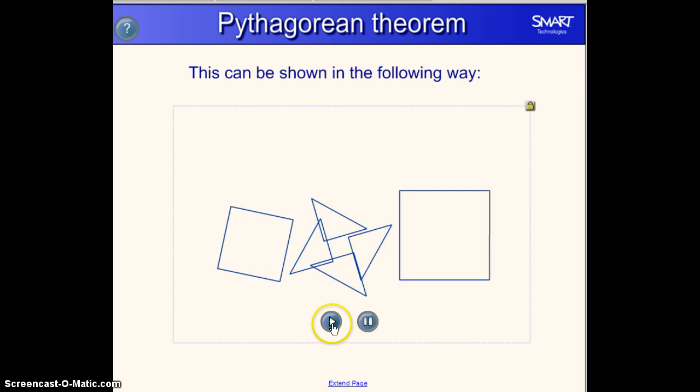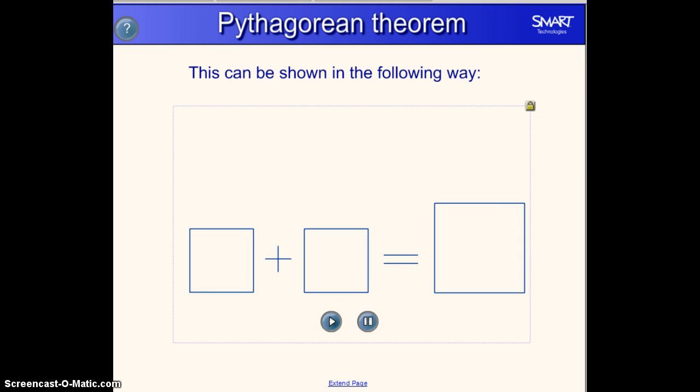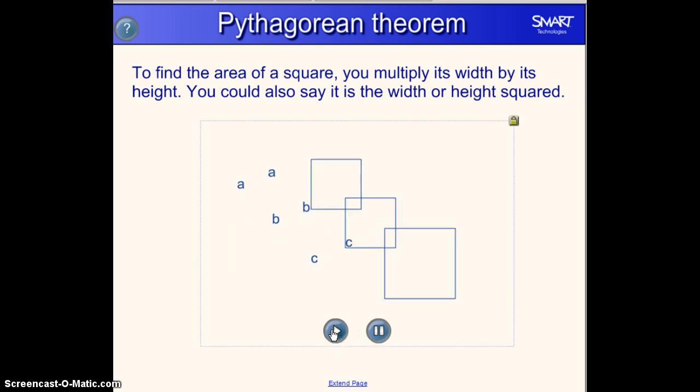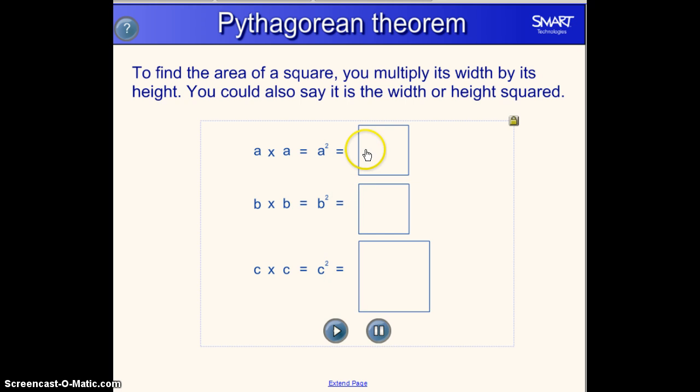This is another way to demonstrate. So to find the area of a square, we always multiply its width by its height. So since it's a square, the side lengths are exactly the same. So the area of square A would be A squared. The area of the square with side length B is B squared. And the area of square C would be C squared.